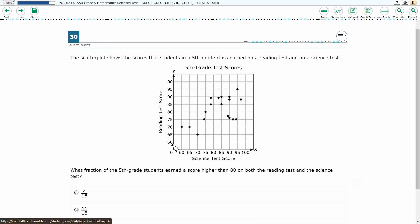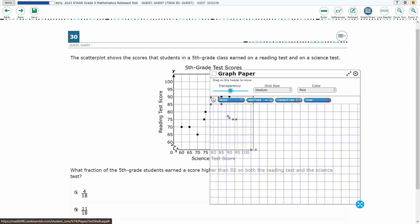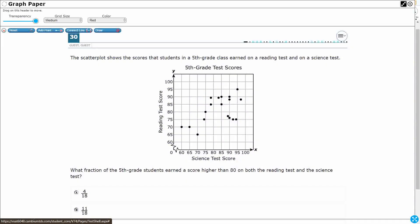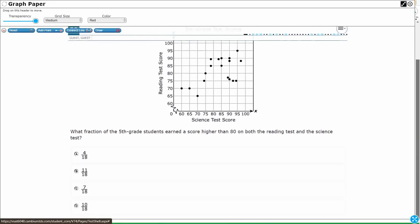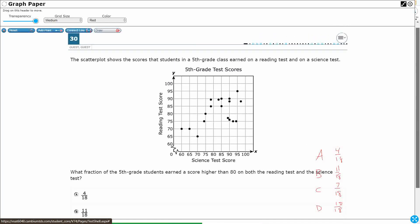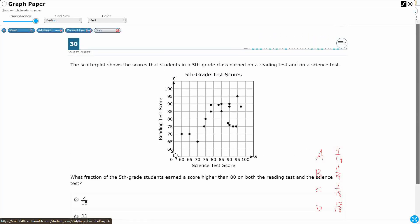Alright, since we're having to scroll up and down here, what I'm going to do is just write these four answers. Because if I'm drawing all over this chart and I have to scroll, it's going to look a little bit weird. So let's do this: A is going to be 4/18, B is 11/18, C is 7/18, and then D is 10/18. Alright, now we can just focus here on our scatter plot.